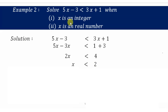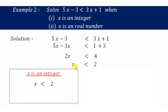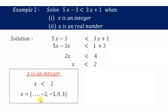When x is an integer and x is less than 2, the values are 1, 0, negative 1, negative 2, and so on — all negative values are also less than 2. So this gives an infinite set, which is the solution for the integer case.